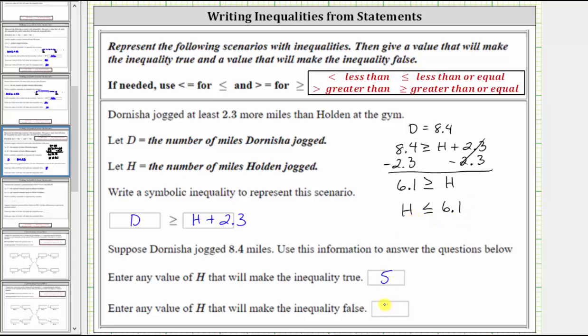For example, if H equals 7, this makes the inequality false because 7 is not less than or equal to 6.1.